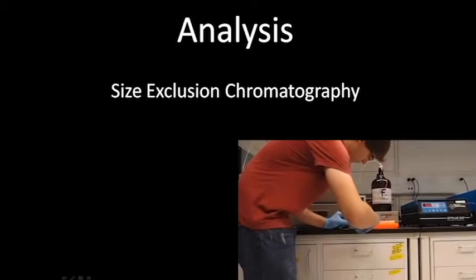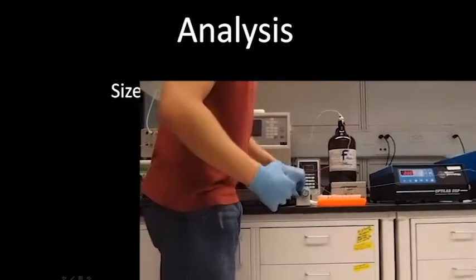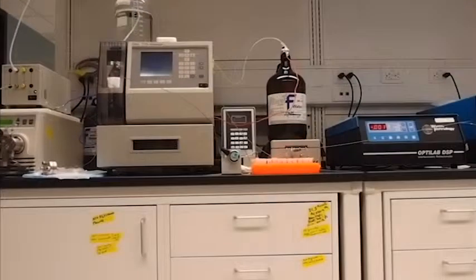Now onto the analysis. Here I am injecting a sample of PIA into the size exclusion chromatography column. PIA is found in a wide range of molecular weights, and I was interested in the size distribution that came from each protocol. PIA comes out of the column at different times depending on its size.